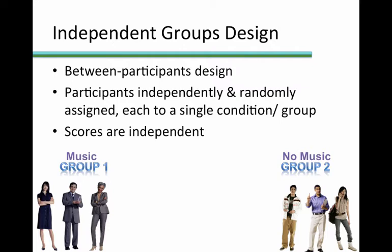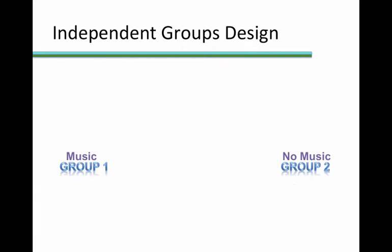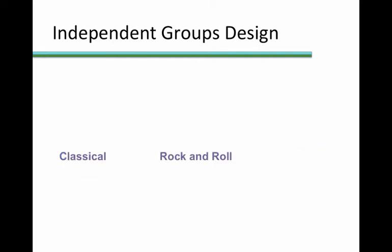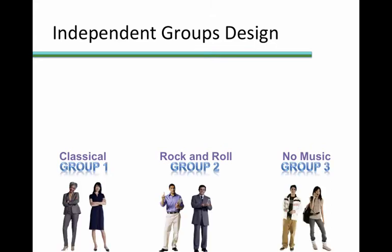We can also have multiple levels of the independent variable in an independent groups design. Let's say we want to see if different types of music affect sleep differently. We could have a classical music condition, a rock and roll condition, and then our control condition of no music. In this case, we have three total levels of the independent variable, so we would have three groups of participants, one for each condition.